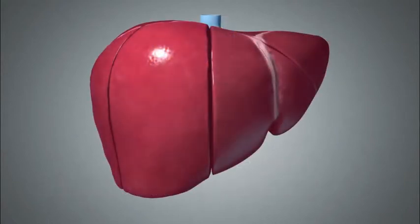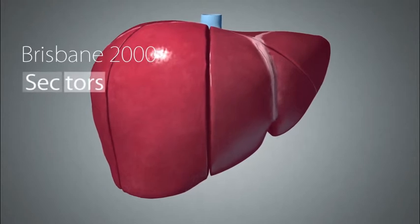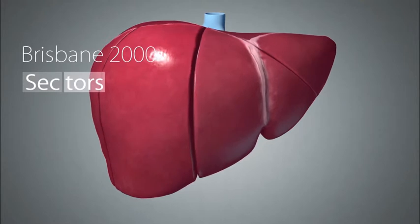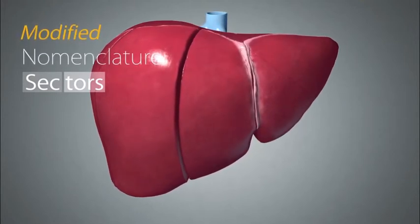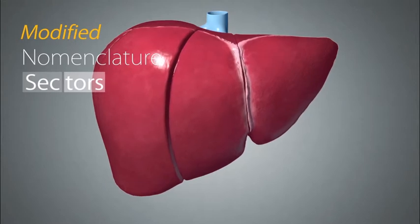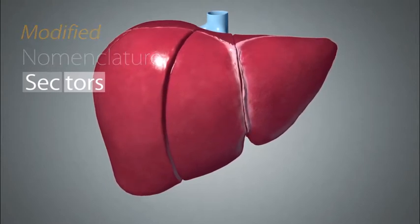According to Brisbane 2000 terminology, the parenchyma that lies superior and posterior to the left hepatic vein is termed the left lateral sector. Using the modified system, the left lateral sector actually refers to all the parenchyma that is left of the falciform ligament, which is termed the left lateral section by Brisbane 2000 terminology. The main difference between the two naming conventions is that Brisbane terminology uses the left hepatic vein to divide the left liver into sectors, whereas under the modified nomenclature system, we use the falciform ligament to divide up the left liver, which is more clinically useful.